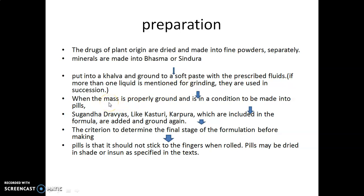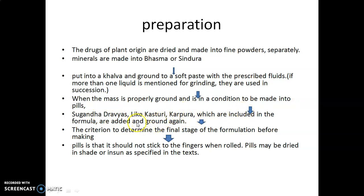After making the soft paste, when the mass is properly ground and is in a condition to be made into pills, the added substances like flavoring agents and coloring agents should be added. Sugandhadravya like Kasturi or Musk, Karpura or Camphor, which are included in the formula, are added and ground again.